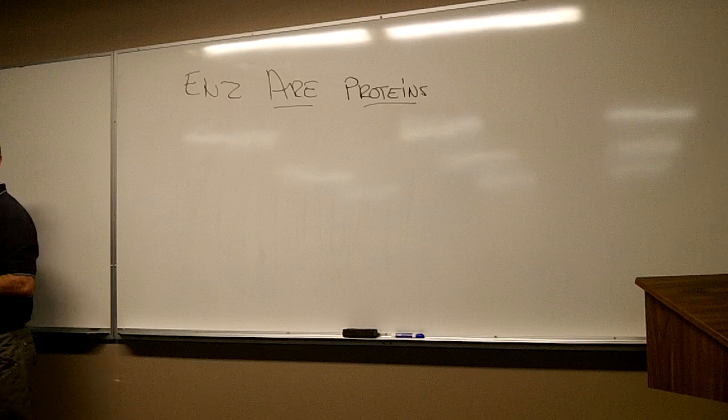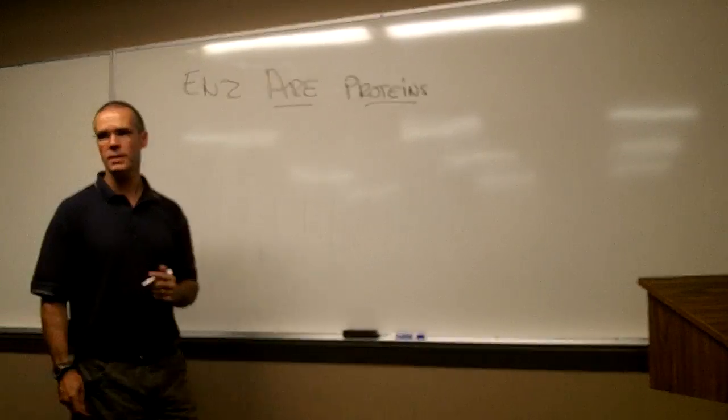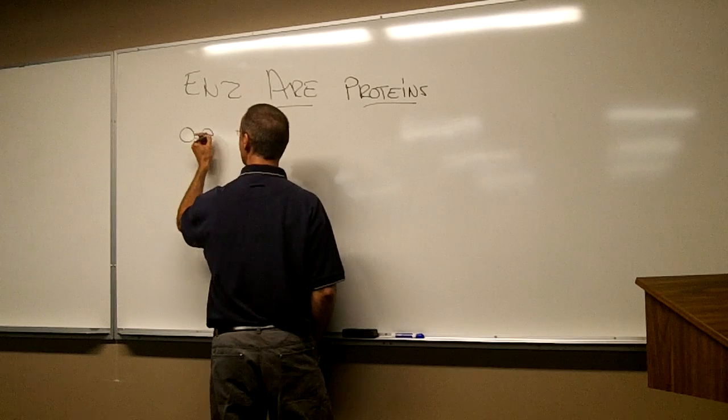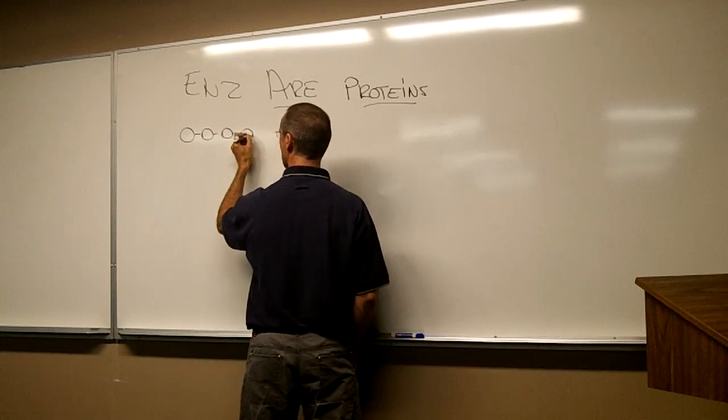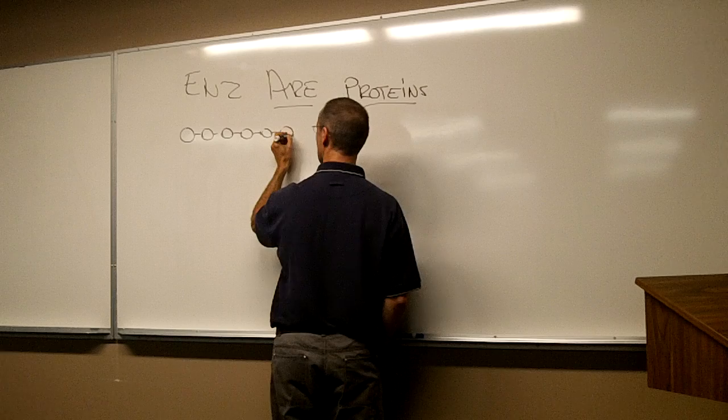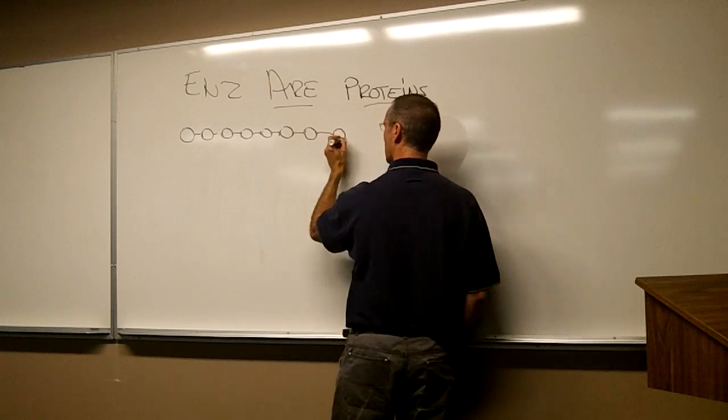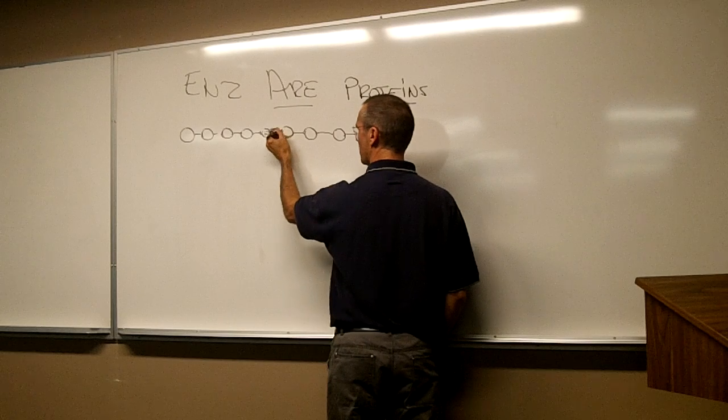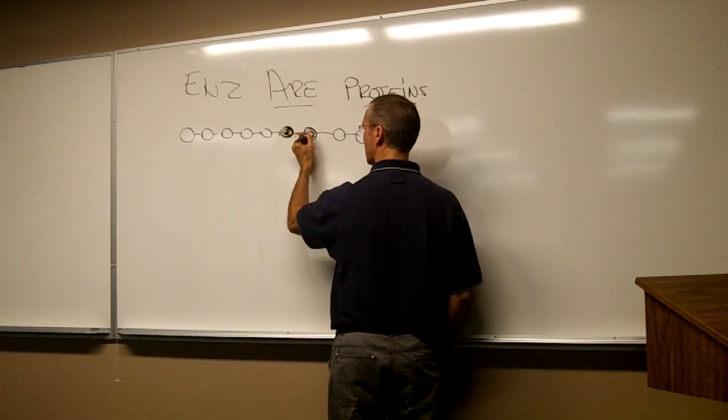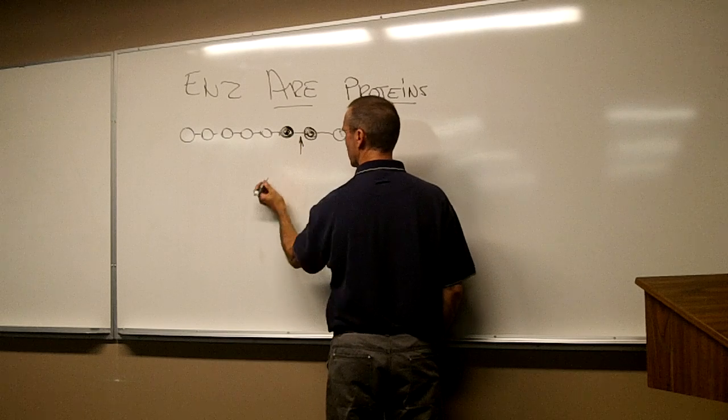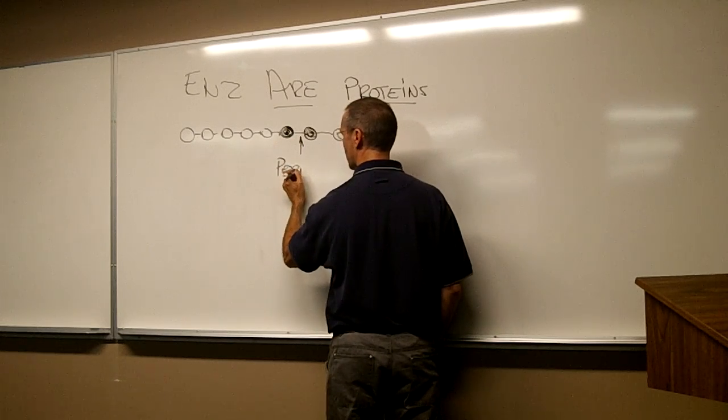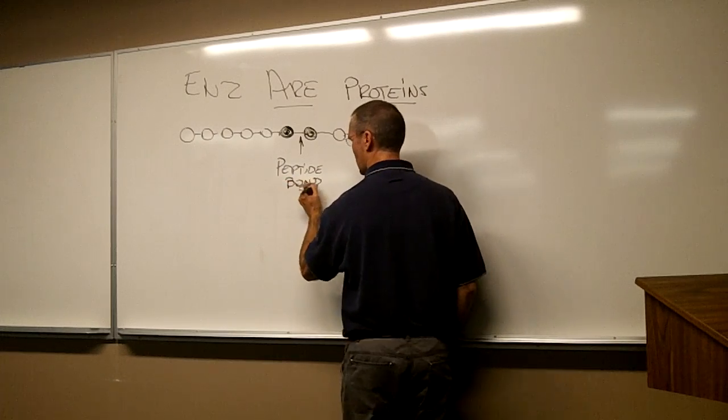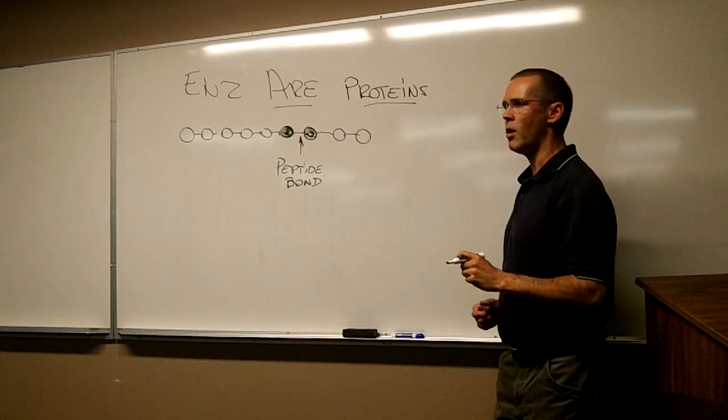They're a type of molecule that is called a protein. And proteins are made of amino acids that are connected to one another, like this. And the connection between two amino acids, so each ball here is an amino acid, and the connection right here is called a peptide bond. Peptide bond.